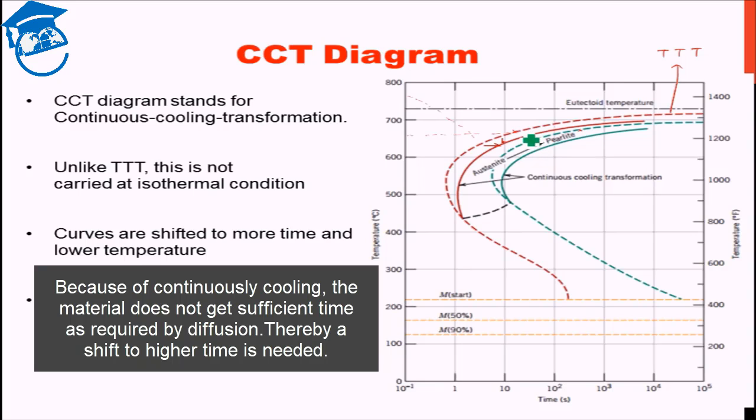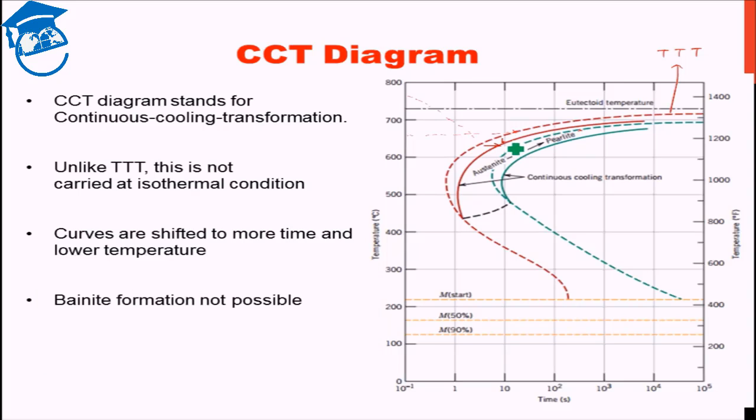Thereby it needs to shift to higher time. And since it is continuously cooling, the temperature is continuously dropping. Thereby it has to lower temperature also in the curve.